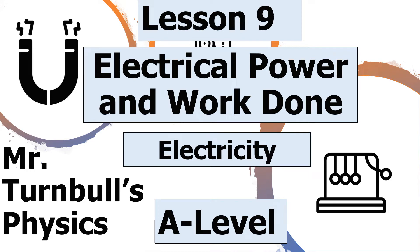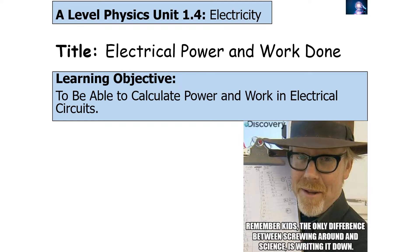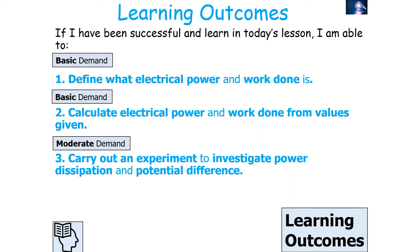Hello and welcome to this lesson on electrical power and work done, which is part of the electricity topic in AQA A-level physics. In today's lesson we're going to look at how you can calculate power and work in electrical circuits. If we've been successful, we should be able to define what electrical power and electrical work done is, calculate them from given values, and understand how to carry out an experiment to investigate power dissipation and potential difference.